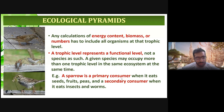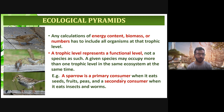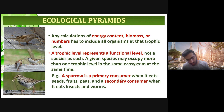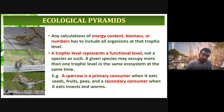A given species may occupy more than one trophic level in the same ecosystem at the same time. For example, a sparrow is a primary consumer when it eats seeds, fruits, and peas, but it is a secondary consumer when it eats insects and worms. A sparrow does not only consume producers — it also consumes primary consumers such as insects and worms. So when it consumes producers it is a primary consumer, but when it consumes primary consumers it becomes a secondary consumer.